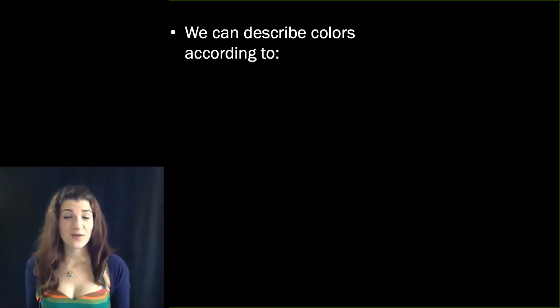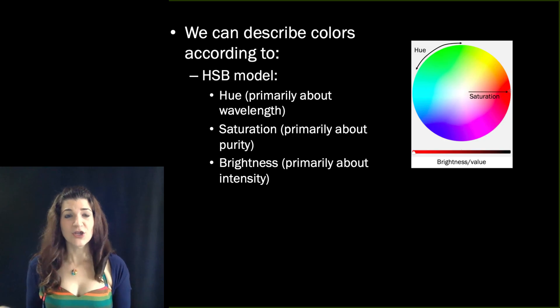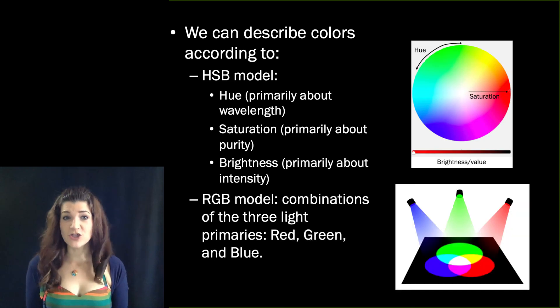So despite the fact that we are able to perceive lots of different colors, maybe millions, depends how you measure it, despite this tremendous variability in the colors that we can see, we can describe them using these relatively simple building blocks of hue saturation and brightness and the RGB model. These are going to be useful to us all term as we talk about different ways of describing and representing the colors that we see.